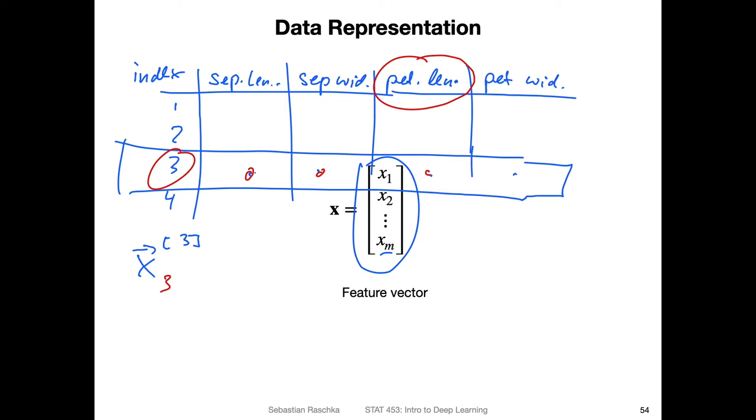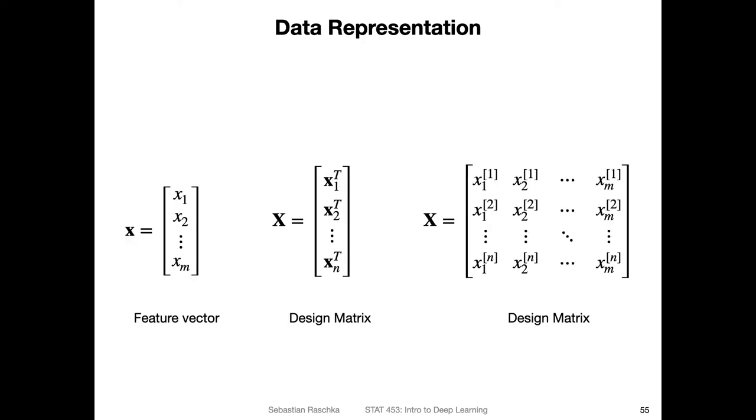So we have an m-dimensional vector, and I will use the subscript notation to refer to the feature index. So if I write something like three here, this would refer to the third, so 1, 2, 3, to the petal length of the third training example. Now in Python we start zero indexing, so if we do Python coding it might be a little bit more complicated because we start indexing at zero in contrast to R. So in Python notation, this would be actually the fourth training example and the fourth feature like petal width.